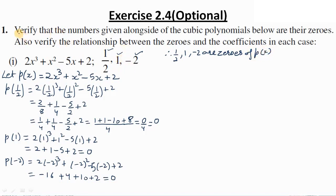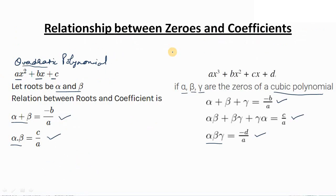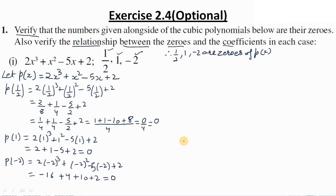Therefore, 1/2, 1, and -2 are zeros of this polynomial. In this question, two things are to be verified: first, that the given numbers are zeros — which we have verified. Second, we need to verify the relationship between the zeros and the coefficients, which we studied for a cubic polynomial. We need to verify that alpha + beta + gamma = -b/a.